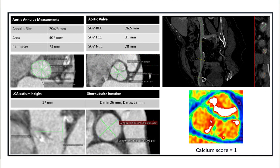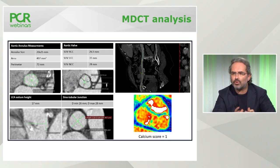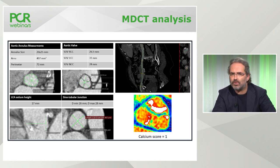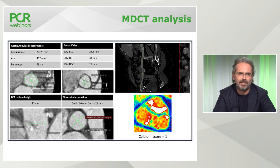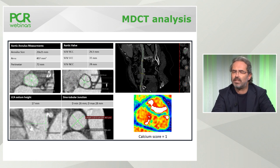Moving on to the case — this is the MDCT analysis. At the level of the virtual basal ring, the mean diameter was about 23 mm. At the level of the sinuses, the measurements are about 30 mm, so the sinuses are not shallow. The sinotubular junction is about 26-28 mm. The peripheral vasculature is quite clear, with a minimum reference diameter of about 7 mm. The estimated calcium score at the valve level was 1.